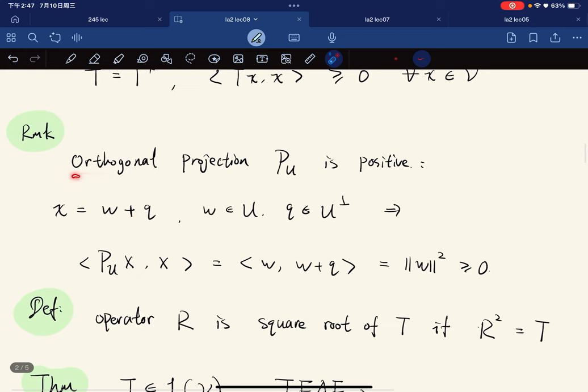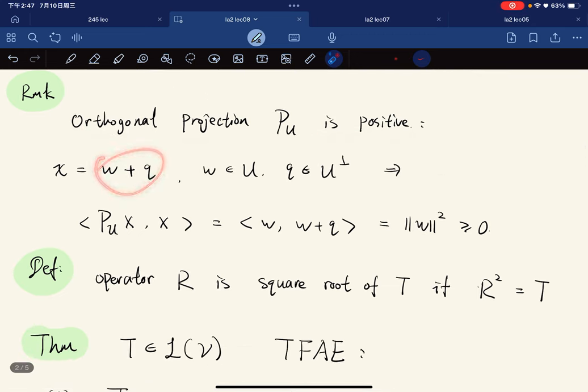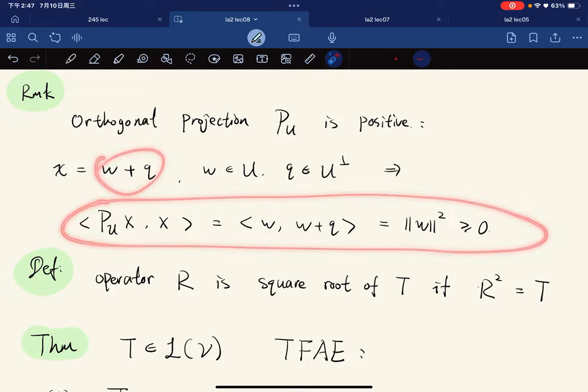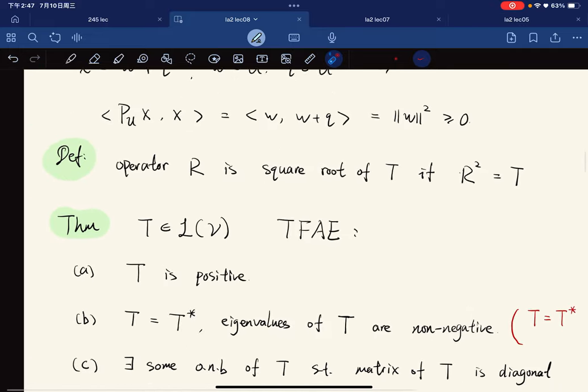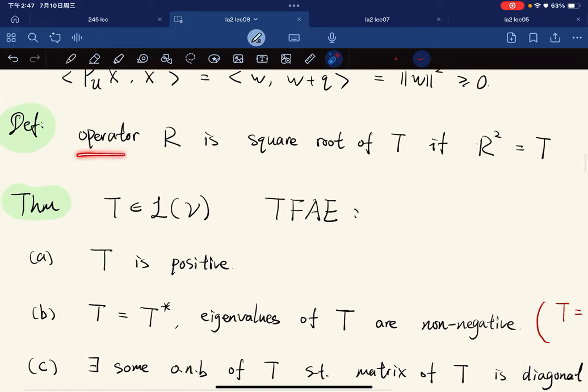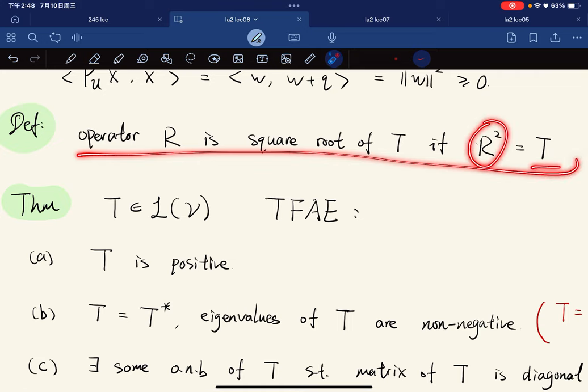A remark is that the orthogonal projection is positive, as we can decompose this and the inner product is basically non-negative. And the operator R is the square root of T if R² equals T. So we define the square root in operators.